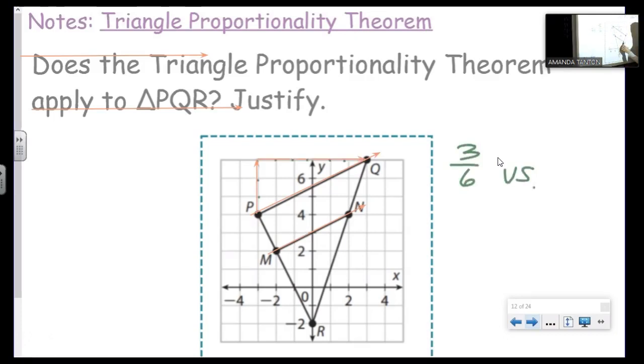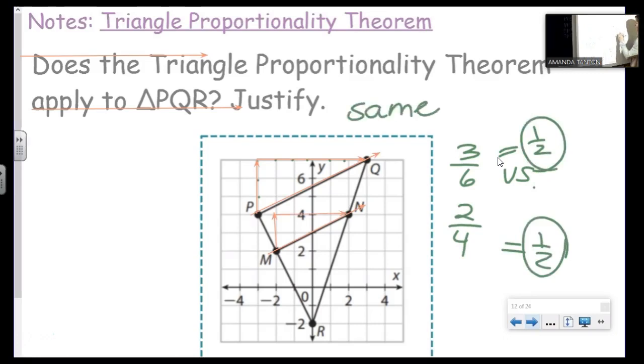MN, rise, 1, 2. Run, 1, 2, 3, 4. What do you think? Yay. Yay. Since they have the same slope, we know that they are parallel, meaning we're allowed to use the theorem.